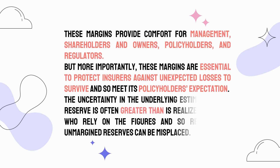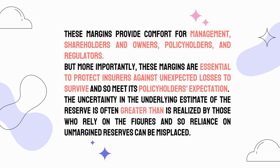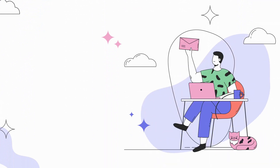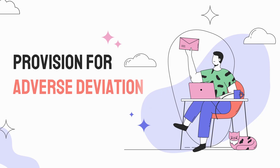The uncertainty in the underlying estimate of the reserve is often greater than is realized by those who rely on the figures, and so reliance on unmargined reserves can be misplaced. We have now understood quite a few things about insurance, so we are ready to move on to the main topic of this video: provision for adverse deviation.